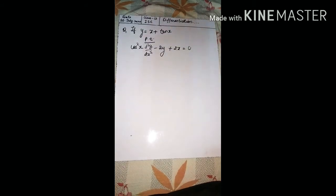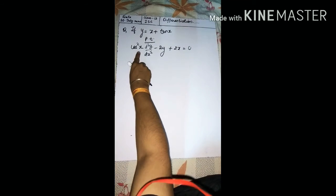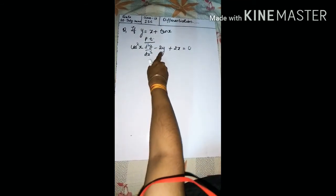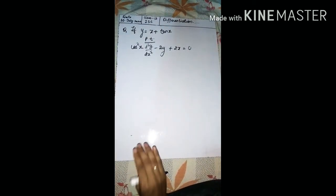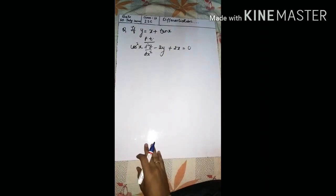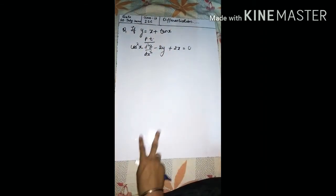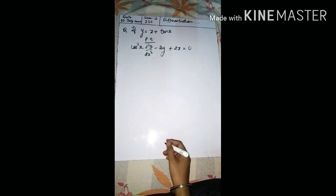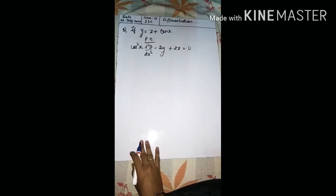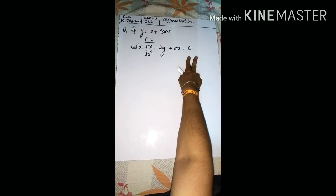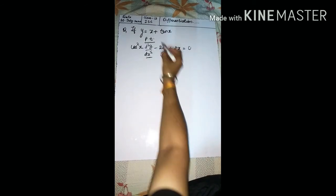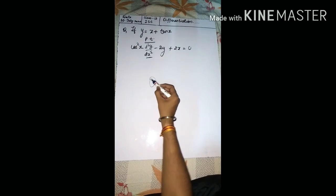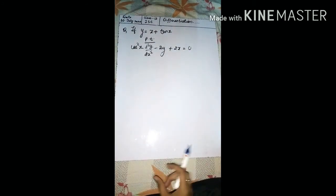If y = x + tan(x), prove that cos²x · d²y/dx² − 2y + 2x = 0. This exercise is very, very important because maximum questions were asked from this exercise. Such type of questions are asked where you have to prove something. There can be two or three ways to solve. One way: take LHS, find d²y/dx², substitute y and x values, and we get 0 equals 0 — satisfied, hence proved.